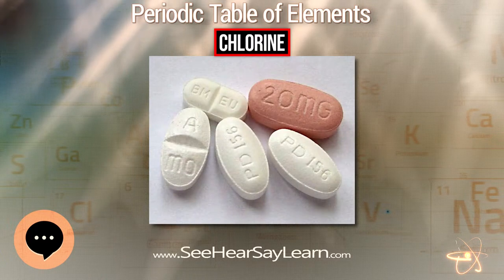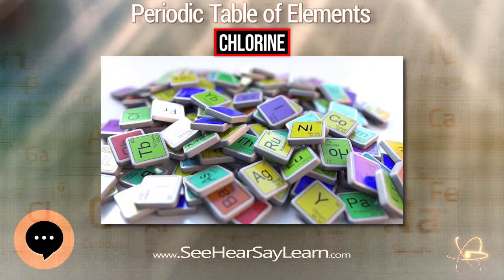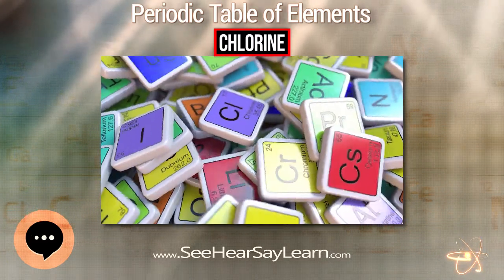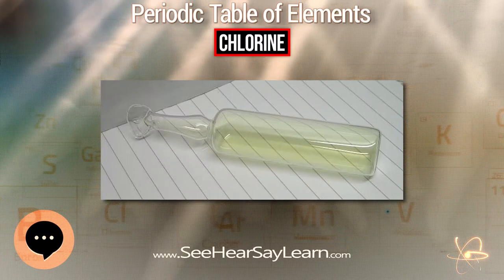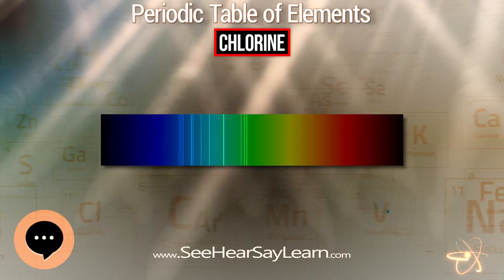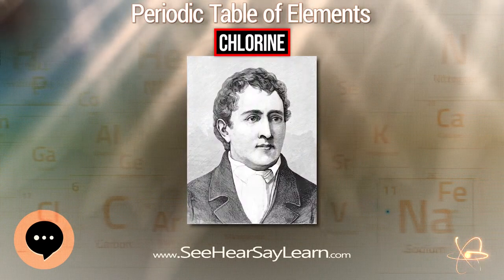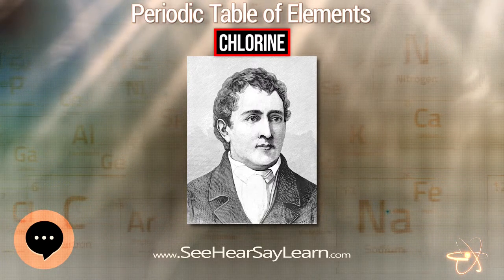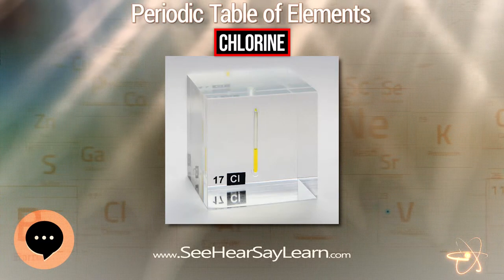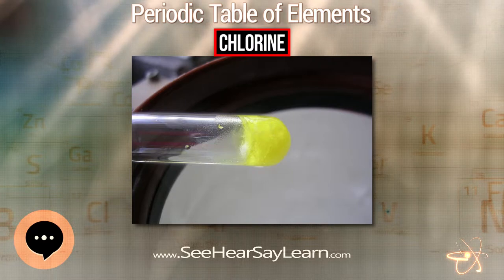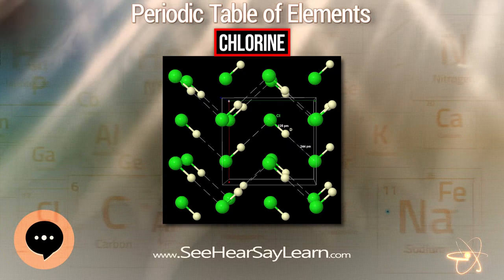Dichlorine monoxide is a brownish-yellow gas which may be obtained by reacting chlorine gas with yellow mercury oxide. It is very soluble in water, in which it is in equilibrium with hypochlorous acid, of which it is the anhydride. It is thus an effective bleach and is mostly used to make hypochlorites. It explodes on heating, sparking, or in the presence of ammonia gas. Chlorine dioxide was the first chlorine oxide to be discovered, in 1811 by Humphrey Davy. It is a yellow paramagnetic gas, stable towards dimerization due to the delocalization of the unpaired electron.